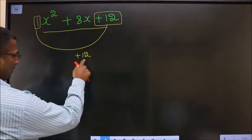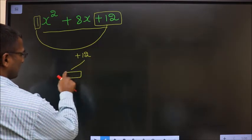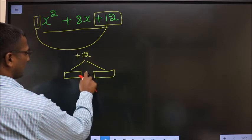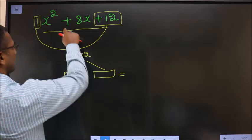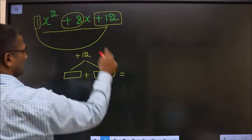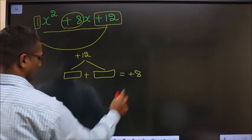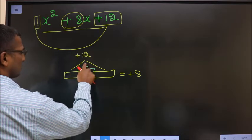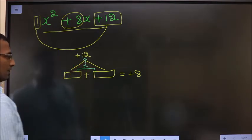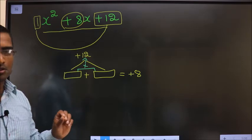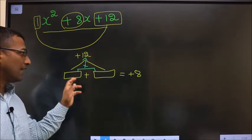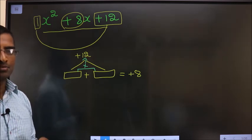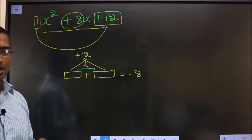Next. Now, you should look for two numbers such that when you add them, you should get this middle number, that is plus 8. And also, when you multiply these two, you should get plus 12. You should look for two numbers such that when you add, you get 8, and when you multiply, you get 12.